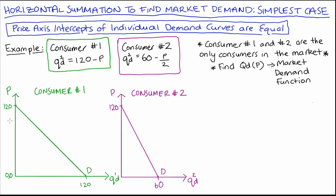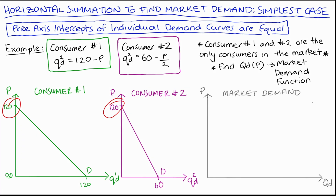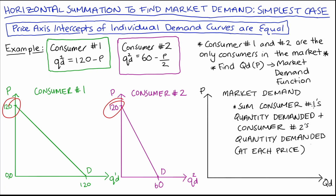What you'll notice when we put these two curves next to one another is that the price axis intercepts are equal, which means that the highest price at which our consumers are engaged in this market is the same for both consumers. And that means that finding market demand is really easy. Our market demand, since these are the only two consumers in the market, is just going to be the sum of how much consumer number one demands plus how much consumer number two demands, summed up over every price.